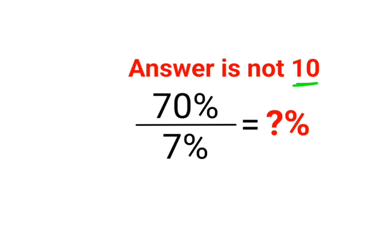See, understand 70% can be written as what? 70 upon 100. Then we have division of 7%, that is 7 upon 100. Now whenever you have a division situation you need to follow the rule of KCF.